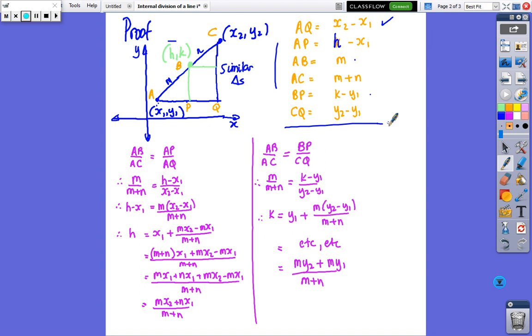Now, in terms of the similar triangles, so, short triangle, AB, over big triangle, AC, must be the same as AP over AQ. And, from here, up the top there, we've got AB, m, over m plus n equals h minus x1 over x2 minus x1.